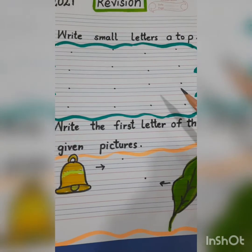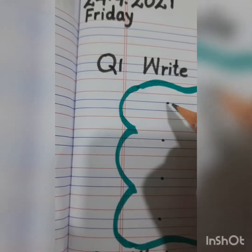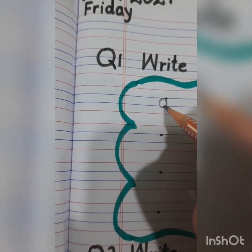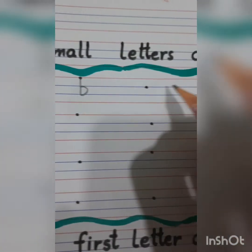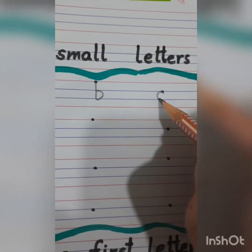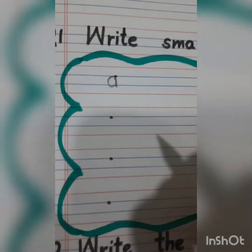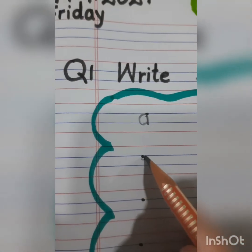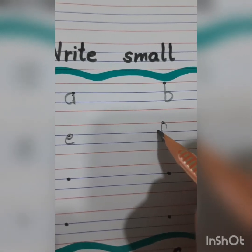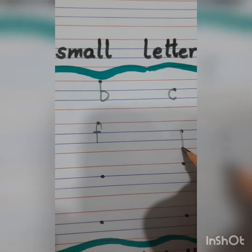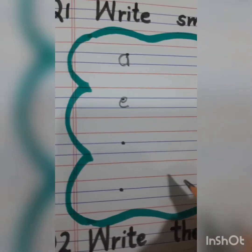So shall we start writing children? Write small A, small B. What comes after B children? C. What comes after C children? Small D, then E, F, G, H, I.